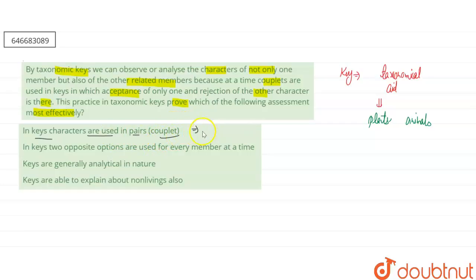That is, in keys there will be the presence of the contrasting character. It will involve contrasting traits or contrasting characters. So this is generally used in pairs and it is called as the couplet. And it represents our choice between two opposite options. There will be the including of the two opposite options in the key, so this is our correct one.